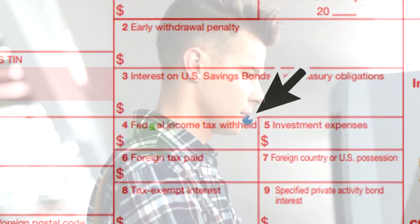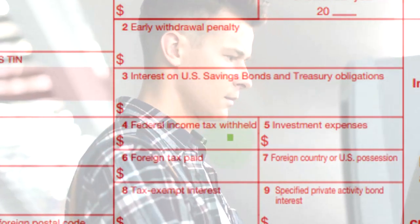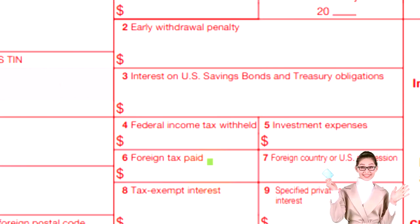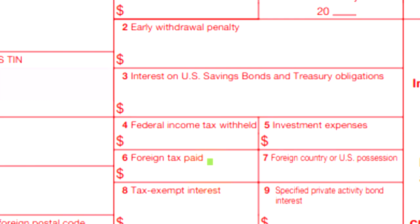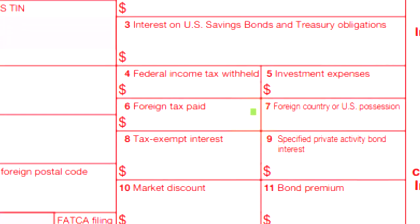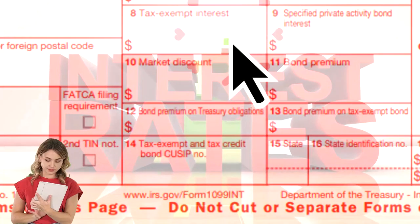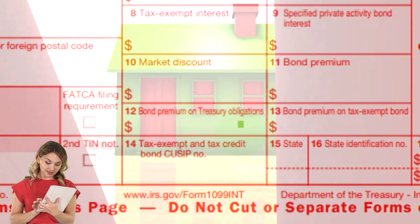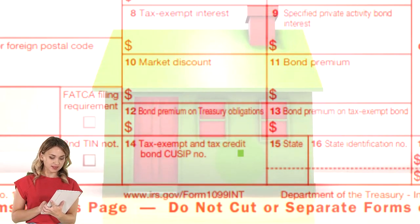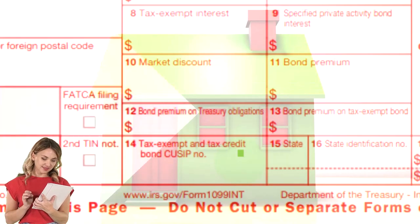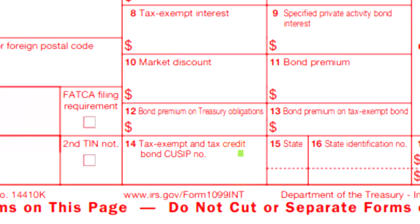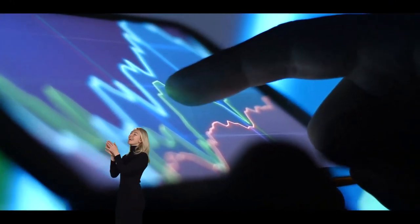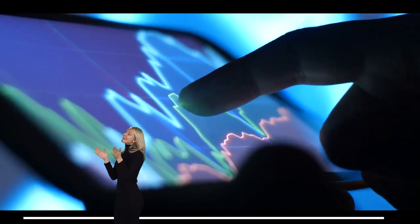Withholdings on interest income are often not the case, although if you have a lot of interest income you can set your withholdings on it. Other boxes include investment expenses, foreign tax paid — so if there's a foreign situation, there can be mixing or problems with the tax code between the U.S. and foreign countries. We have to have agreements possibly with foreign countries so that we don't have a double taxation situation for the same income. There is also a box for tax-exempt interest, so we're talking about that type of interest that might be exempt for taxes. Some of these boxes are less common than others; if you see something in a box that you're not familiar with, you can look at the instructions to get more information about what is included in that particular box.